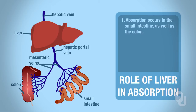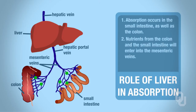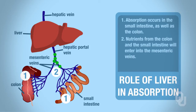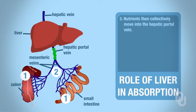We have some absorption going on in the colon as well. Whatever nutrients are in the intestines and whatever has been absorbed by the colon will enter into the mesenteric veins. So nutrients are going from the small intestine — numbered 1 — and the colon — also numbered 1 — into the mesenteric veins, labeled number 2, which then collectively meet up with the hepatic portal vein, numbered 3, and then to the liver.